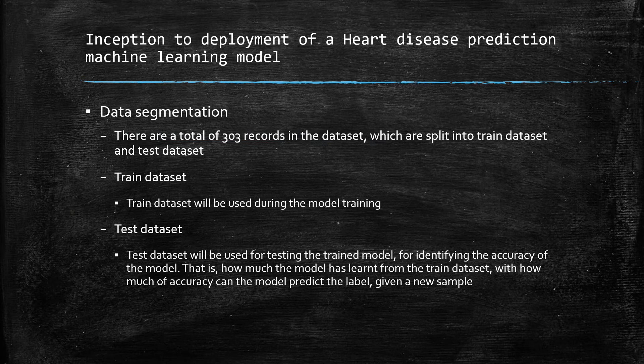These 303 records or data samples are divided into a training dataset and a test dataset. We will use the training dataset during the training of the model, and the test dataset will be used while evaluating the model's accuracy.